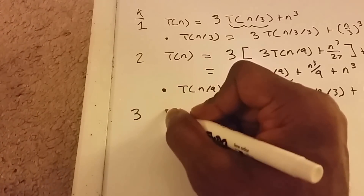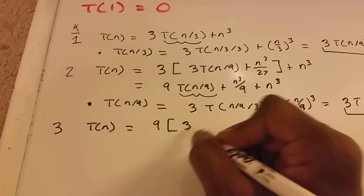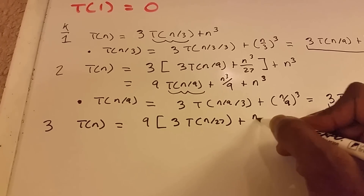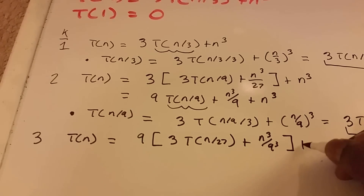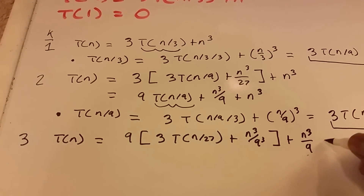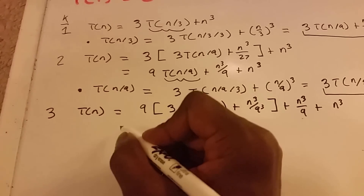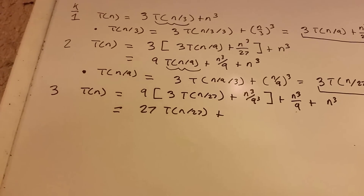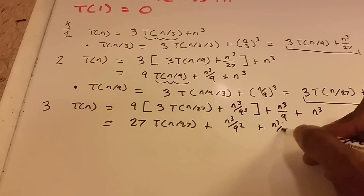Now we're on iteration 3, and T of n equals 9 times T of n divided by 9, which we said is this here. So that's times 3 times T of n divided by 27, plus n cubed divided by 9 cubed, and then we add the rest: plus n cubed divided by 9, plus n cubed. Simplifying, we get 27 T of n divided by 27, plus n cubed divided by 9 squared, plus n cubed divided by 9, plus n cubed.